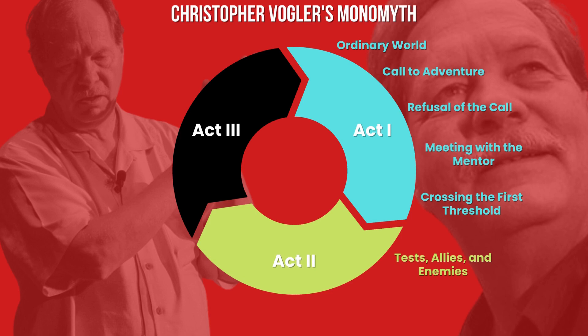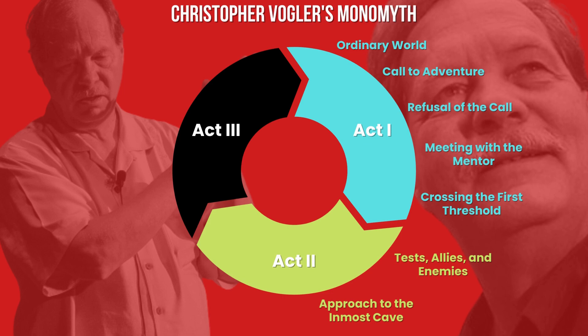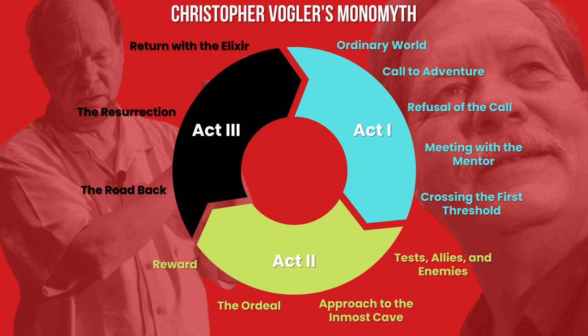Act 2 begins with tests, allies, and enemies, where the hero explores a new environment, makes friends, and faces trials and enemies. Next is the approach to the innermost cave, where the hero gets close to the middle of the story and starts to understand the new world. The ordeal is when the hero faces their toughest challenge and experiences death and rebirth, metaphorically or literally. This leads to the last stage in Act 2 — the reward — when the hero faces the consequences of surviving death. Act 3 starts with the road back, where the hero either returns to the ordinary world or continues to a new destination. This is followed by the resurrection, where the hero experiences a final moment of death and rebirth to become pure. The final stage is the return with the elixir, when the hero comes back with enlightenment or an object that will improve the ordinary world.